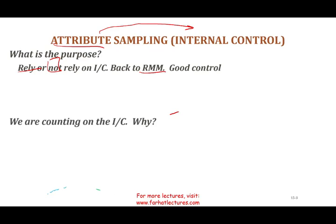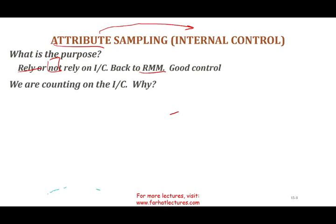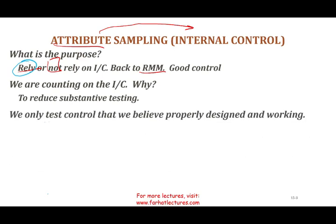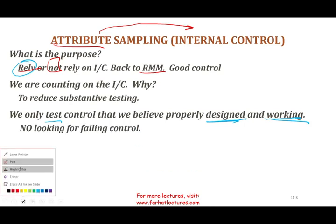If we decide to rely on internal control, we're counting on it to reduce our substantive testing. If internal control is good, we do less work. We only test the control if we believe it is properly designed and working. If controls are not properly designed and working, we don't rely on them. If we believe they're good, we will test them.